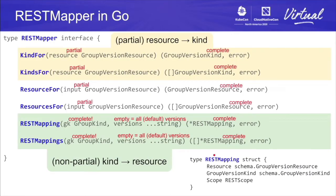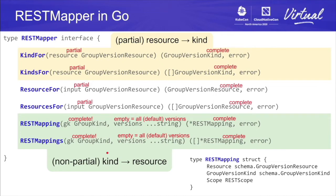A quick look at the REST mapper interface in Go. There are three kinds of functions. The yellow functions map partial resources to kinds. The white ones map partial resources to complete, fully qualified resources. The green ones take complete group kinds — group cannot be omitted — and versions to REST mappings. A REST mapping is the fully qualified resource, the kind, and the scope. The green one is most interesting in the context of garbage collection, because garbage collection uses owner references which are group kinds.